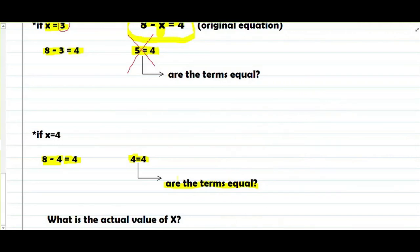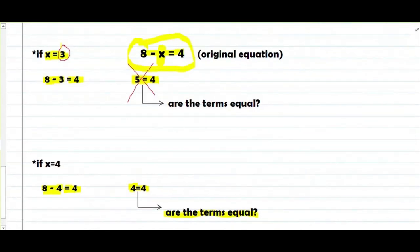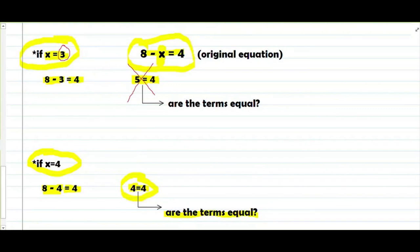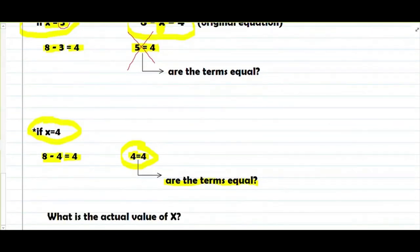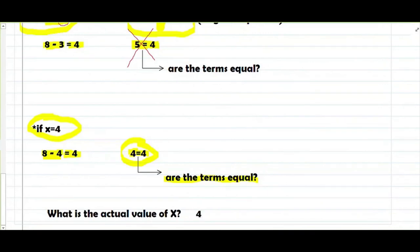Ang next tanong is: what is the actual value of x? Ang magiging actual value of x natin is yung nagbigay sa atin ng tamang equation — ang nagbigay sa atin ng tama ay yung 4. So the actual value of x ay magiging 4. Doon nagtatapos ngayon yung discussion natin para sa video na to. Sana may natutunan kayo — share naman yung video na to para marami tayong matuto. Thank you.